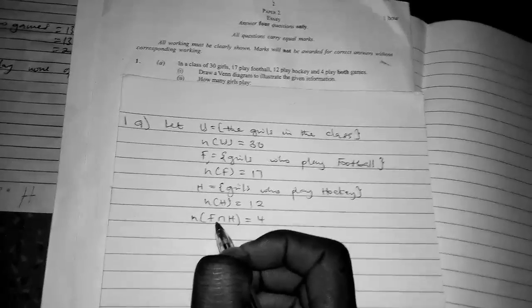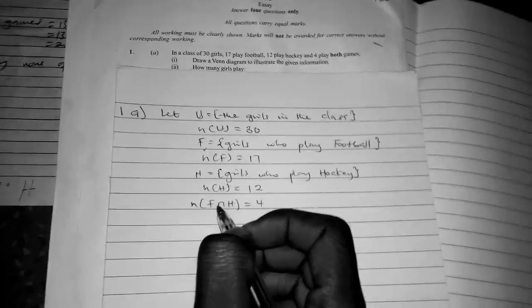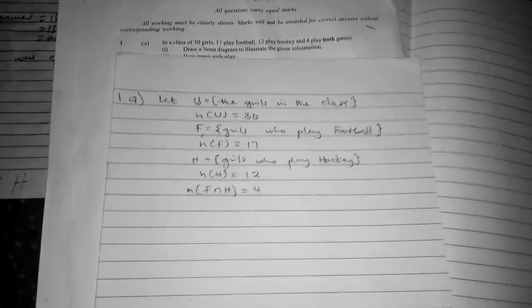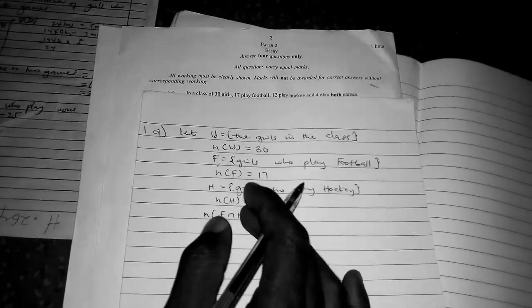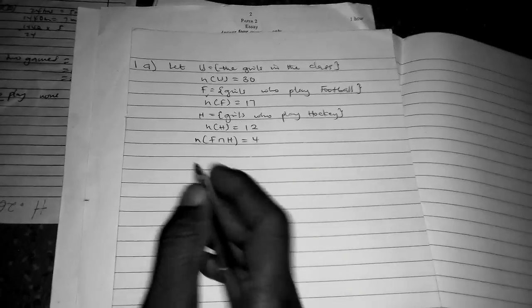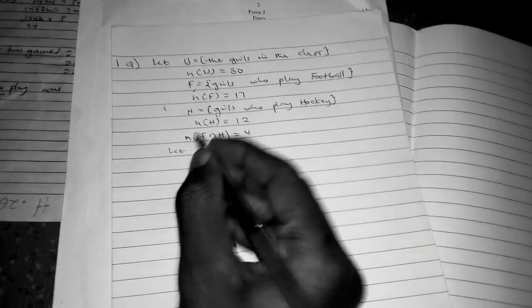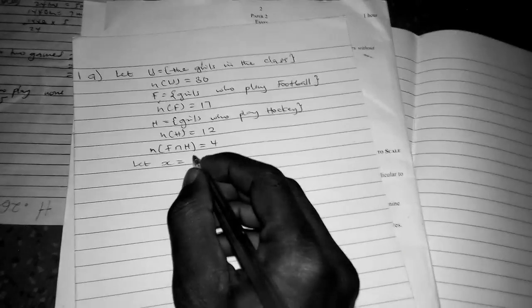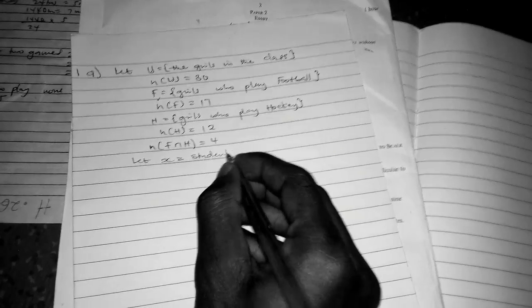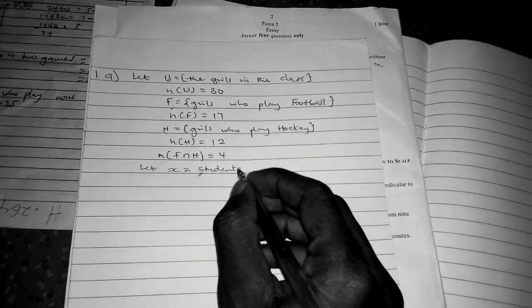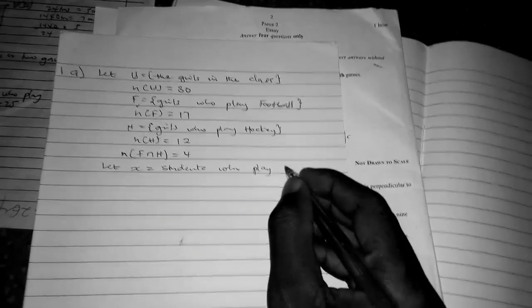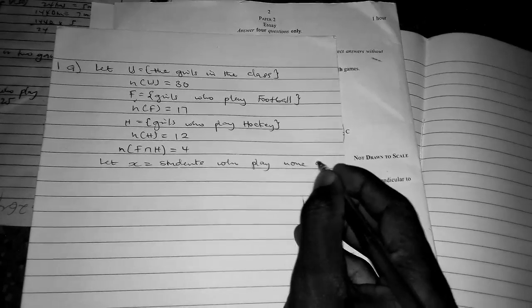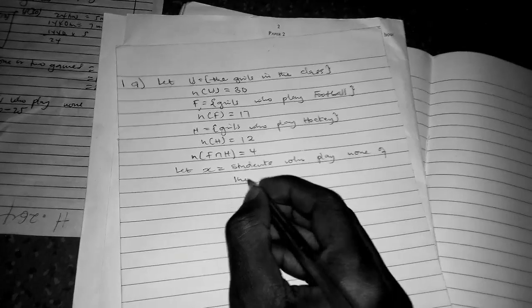Since the question did not discuss whether all of the students took part in the activity or not, let X = students who play none of the two games.